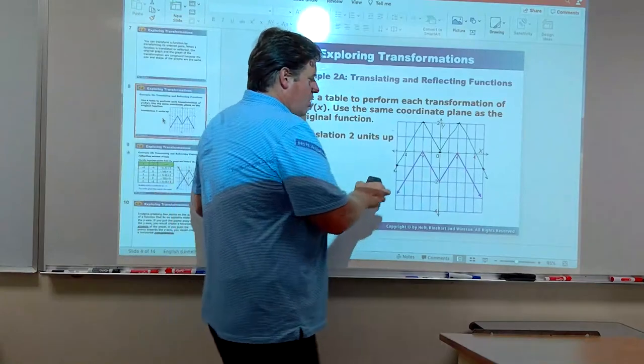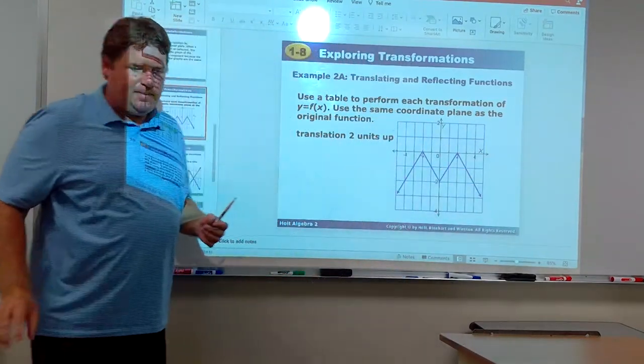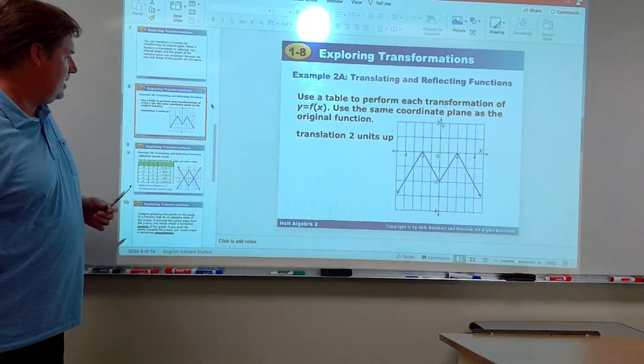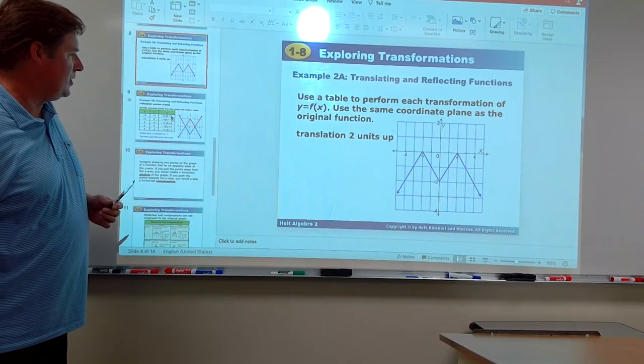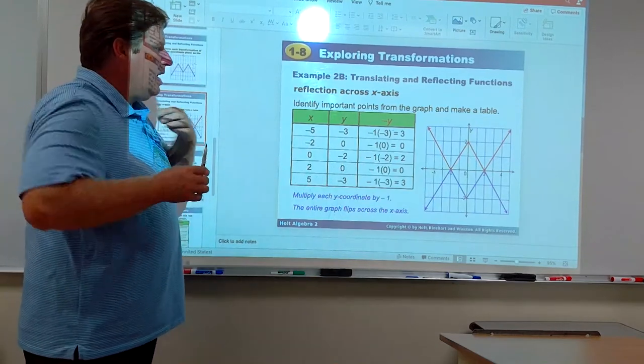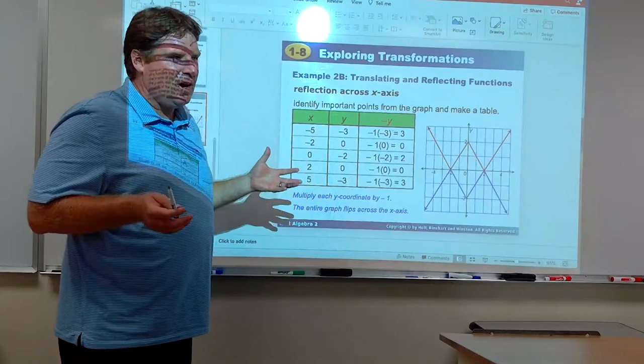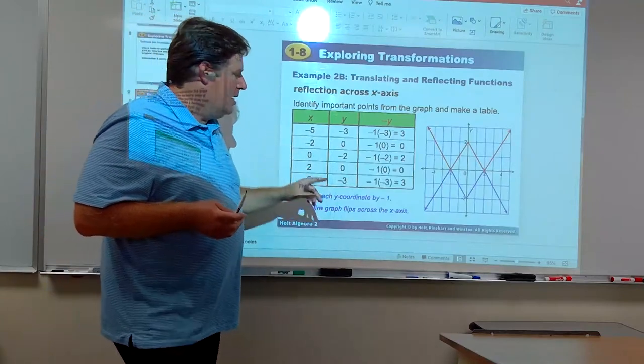But sometimes you don't want to draw out the graph all the time. So, what you can do instead is make a table of values. What I would do is pick out three for sure, four, depending on the graph. This one, we choose five points.